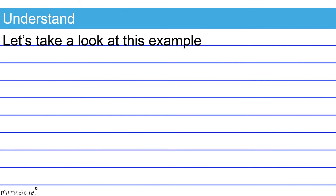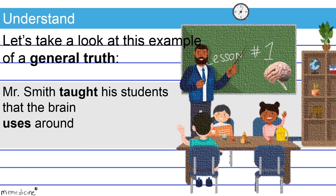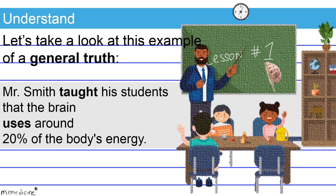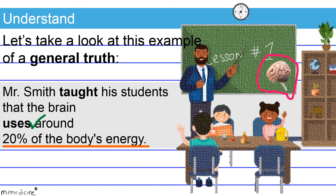Let's take a look at this example of a general truth. Mr. Smith taught his students that the brain uses around 20% of the body's energy. The sentence shifts to the present tense to state a general truth. This shift is appropriate in this instance. We shift from a lesson Mr. Smith gave in the past to a description of a biology fact — a general truth — that he shared during this lesson. Hence, our use of a shift to the present tense is warranted.